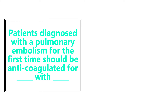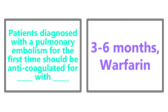Patients diagnosed with a pulmonary embolism for the first time should be anticoagulated for how long and with what? For purposes of the exam, a first-time PE should be anticoagulated for three to six months with warfarin. There are differing opinions involving heparin, lovenox, and bridging, but for the exam, three to six months with warfarin is the answer.